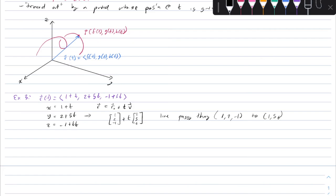You can also represent plane curves using vector notation. For example, if X = T² − 2T and Y = T + 1, with no Z component, it's a plane curve. This would be represented by the vector function R of T = <T² − 2T, T + 1>, without a Z component.